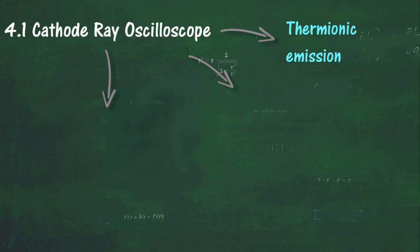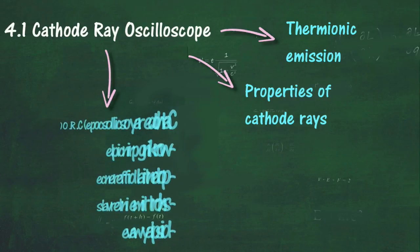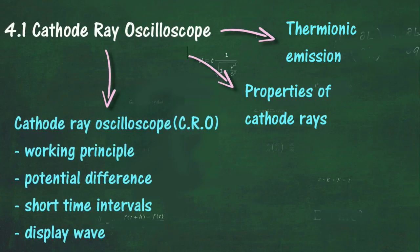Explain thermionic emission, describe the properties of cathode rays, describe the working principle of the cathode ray oscilloscope, measure potential difference using the cathode ray oscilloscope, measure short time intervals using the cathode ray oscilloscope, display waveforms using the cathode ray oscilloscope, and solve problems based on the cathode ray oscilloscope display.